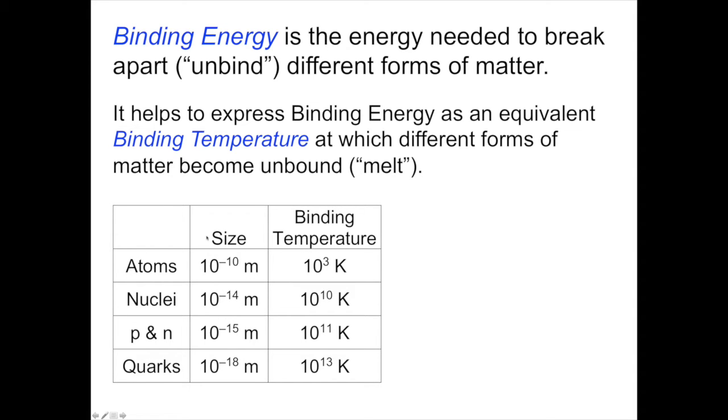Here are four different states of matter, the relevant size scales and the typical binding temperatures. Atoms consist of electrons bound to atomic nuclei. Their typical size scale is 10^-10 meters, and they become unbound when the temperature exceeds the binding temperature of about 1,000 degrees Kelvin.